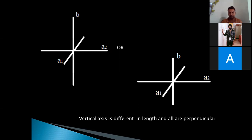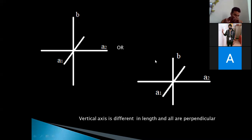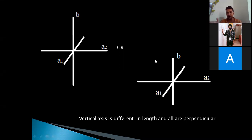In this second example, you can see that the vertical axis is different in length while all axes are still perpendicular. In the first diagram all axes were equal in length, but here the vertical axis is different, and because of which we give it the name B. The axis running from front to back is A1, and from right to left is A2, since A1 and A2 are equal in length. The third vertical axis is different — it could be either longer or shorter — so it gets a different name, B. Whether it is shorter or longer doesn't matter; what matters is that it is different from the two horizontal axes.